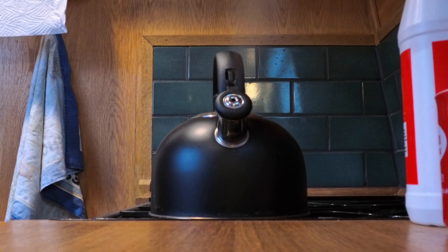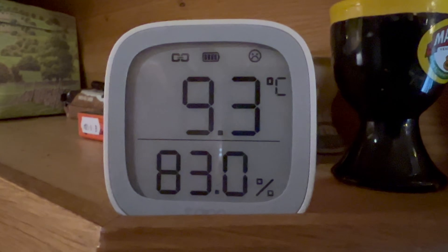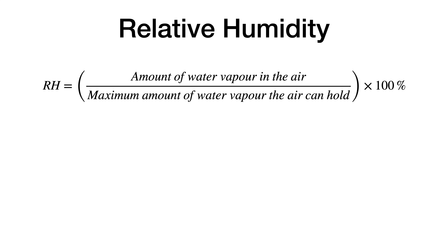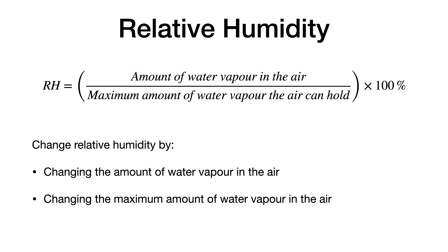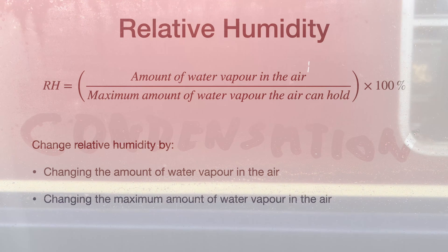If you've got a device on your boat that tells you the temperature and the relative humidity, you'll know it changes. Here for example it's 9.2°C and 83% relative humidity. Is 83% relative humidity humid? Relative humidity is the amount of water vapor in the air divided by the maximum amount of water vapor the air can hold at that temperature, multiplied by 100. If we change the amount of water vapor or the temperature, we change the relative humidity. When relative humidity hits 100% we get condensation.